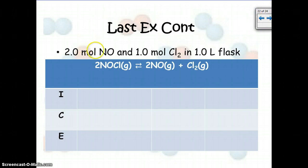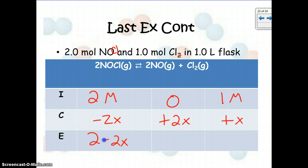And the last one we have is 2 moles of NOCl and 1 mole of Cl2 in the flask. So we have 2 molarity, because we're in a 1 liter flask, and then 1 molar of this. All right, so we know we've got to make more of this, so this will be minus 2x, this started at 0, plus 2x, and then this would be plus x. So we have 2 minus 2x, 2x, and 1 plus x.